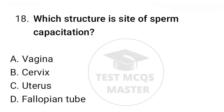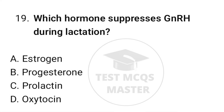Question number eighteen: which structure is the site of sperm capacitation? The correct option is D, fallopian tube. Question number nineteen: which hormone suppresses GnRH during lactation? The correct option is C, prolactin.